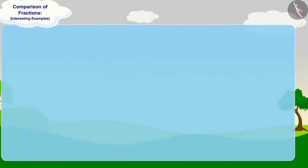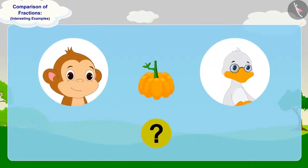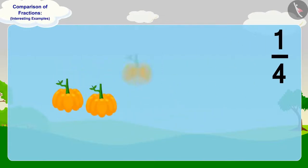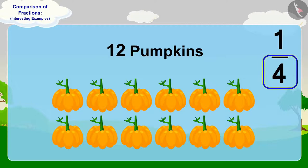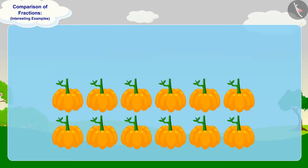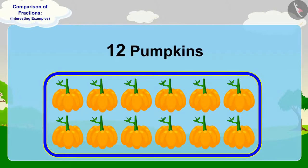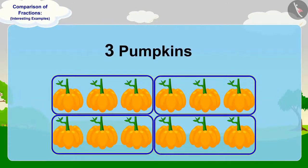Children, can you tell how many pumpkins Babban will give to uncle? For one-fourth, we have to divide our whole into four equal parts. Here, we have a total of 12 pumpkins as our whole. We will divide them into four equal parts. If we make four equal parts of 12 pumpkins, then how many pumpkins will be there in each part? Exactly — three pumpkins.